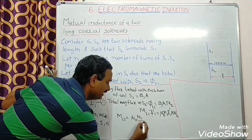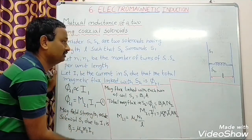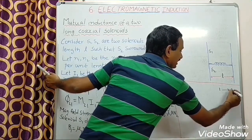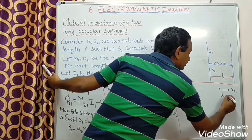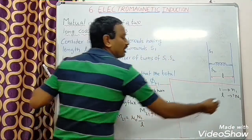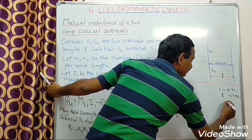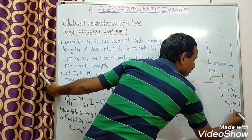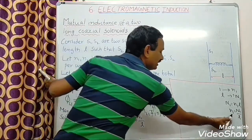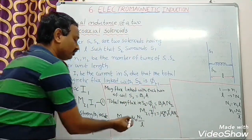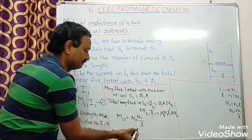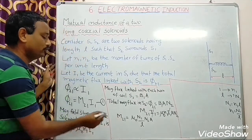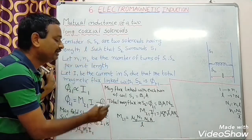I can write, in the place of small n1, capital N1 by small l. How I got N1 by l? One unit length contains small n number of turns. L unit length contains capital N turns. By cross multiplication, you get N1 equal to small n1 into L, so small n1 equal to capital N1 by L. I replaced small n1 with capital N1 by L, into N2 into A. Finally, M21 equal to μ0 N1 N2 A by L.